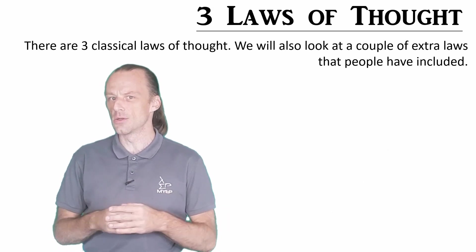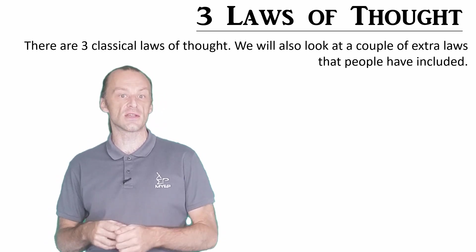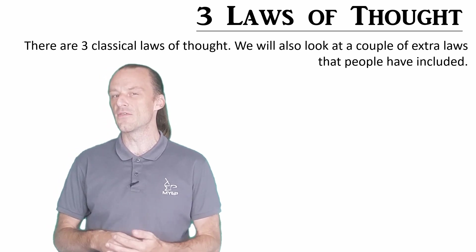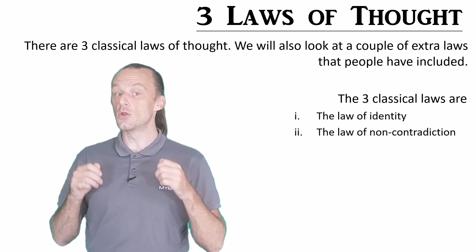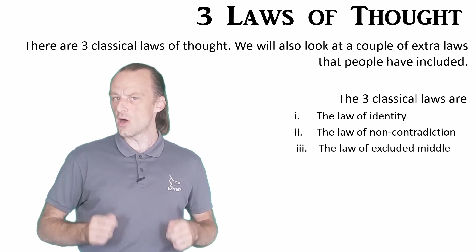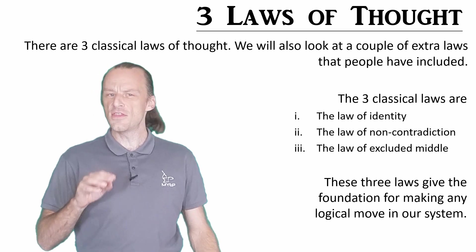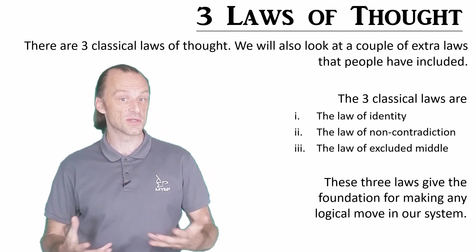There are three classical laws of thought which we will look at. Extra laws have been discussed on top of this for different reasons. We will look at a couple of the most common of those. The three classical laws are the law of identity, the law of non-contradiction, and the law of excluded middle. These three laws give a basic foundation for our logical system to work.